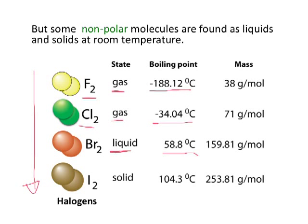We're going to consider room temperature to be 21 degrees Celsius. So bromine is a liquid at room temperature, and lastly, iodine is found as a solid at room temperature. Remember that these are all non-polar molecules, which tells us that non-polar molecules can form intermolecular forces — they just happen to be very, very weak. One question we're going to address is why you see this trend of going from a gas down to a solid as you move down the halogens.